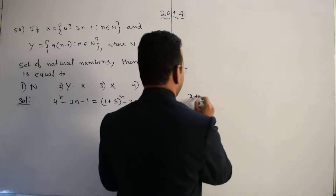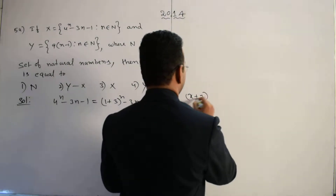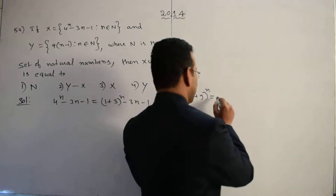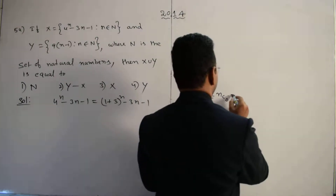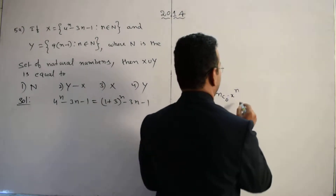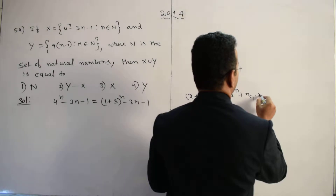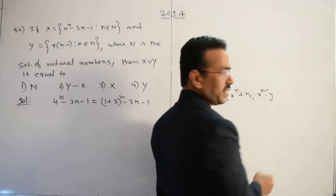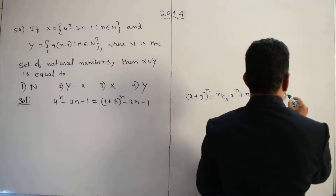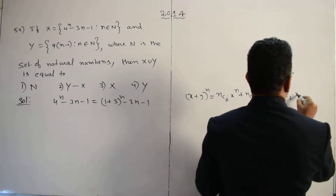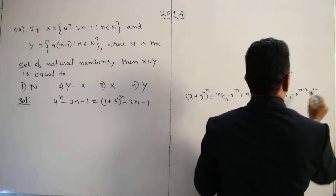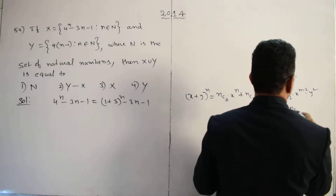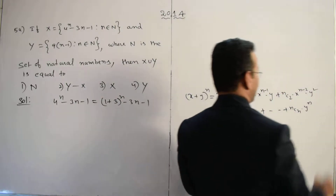The binomial expansion of (x+y)^n equals nC0 times x^n plus nC1 times x^(n-1) times y plus nC2 times x^(n-2) times y^2, continuing up to the last term nCn times y^n.